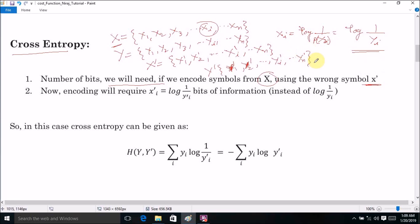Now in this case, the encoding will require encoding of symbol X, Y' will require log of 1 by Y'i bits of information instead of log of 1 divided by YI. So in this case, we can define the cross entropy for distribution Y and Y'.